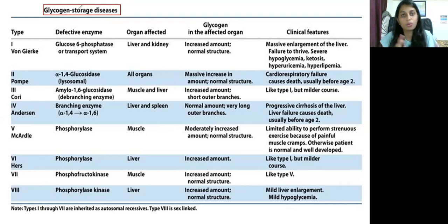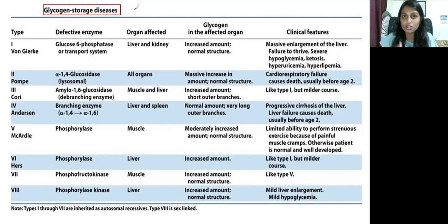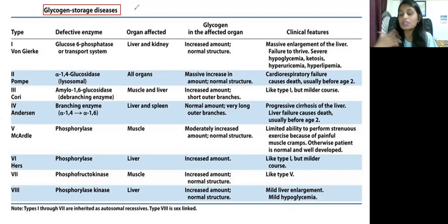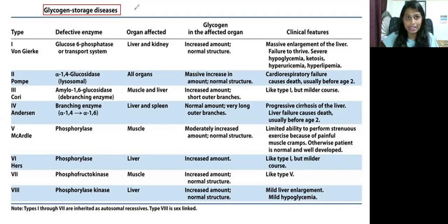A metabolism has to take place for the conversion of glycogen to glucose, because glycogen is a polysaccharide made up of glucose monosaccharides. It has to break down into monosaccharides. Some sort of ATP has to be released in the form of energy currency.